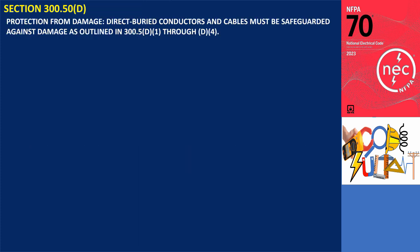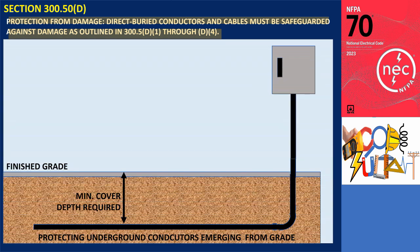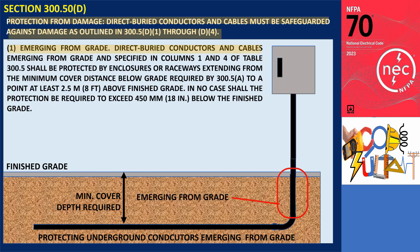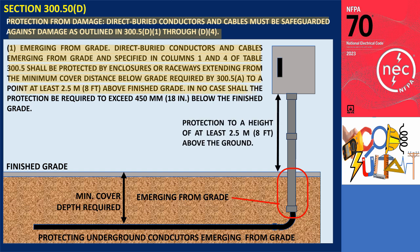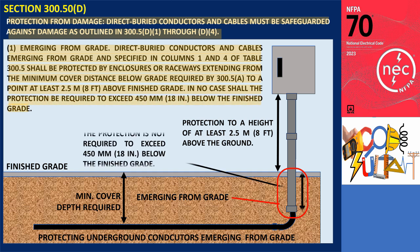Section 300.5(D), Protection from Damage. Direct buried conductors and cables shall be protected from damage in accordance with 300.5(D.1) through D.4. Section 300.5(D.1), Emerging from Grade: direct buried conductors and cables emerging from grade, as specified in Columns 1 and 4 of Table 300.5, shall be protected by enclosures or raceways extending from the minimum cover distance below grade required by 300.5(A) to a point at least 2.5 meters (8 feet) above finished grade. In no case shall the protection be required to exceed 450 millimeters (18 inches) below the finished grade.